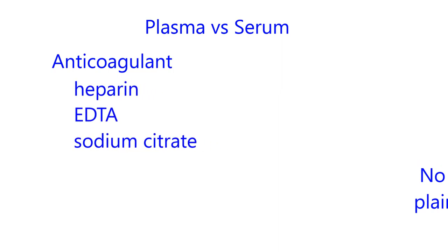Here are three very common anticoagulants. Heparin — sometimes on the bottle you'll see it labeled as sodium heparin. Then there's EDTA, which is a long word that I won't get into in this introductory course, but it's a very common anticoagulant. And then the third common one is sodium citrate. These would be commonly used in test tubes when you collect blood, and there are different reasons for using different anticoagulants.